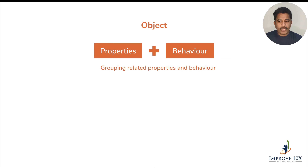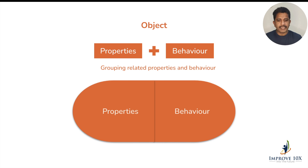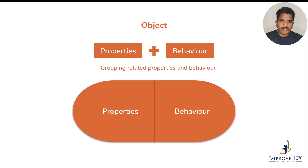If you are grouping all the related properties and behavior into a single entity, that entity looks like a capsule — you have properties, you have behavior, and that is the reason they coined the term encapsulation. The main concept is not just adding properties and behavior; it is about grouping related properties and behavior, which reduces dependency with the outside world and also makes the object more secure and safe.